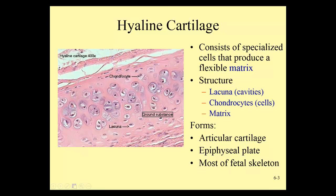Cartilage is very flexible and has good shock absorbency. We find hyaline cartilage lining the ends of our long bones — we call that articular cartilage. The epiphyseal plate is an area of growth in children at the ends of long bones, allowing them to grow in length; it disappears after we're done growing and becomes an epiphyseal line. Our entire skeleton, other than the skull and clavicle, develops from hyaline cartilage early in fetal development, and slowly ossifies to become bone.